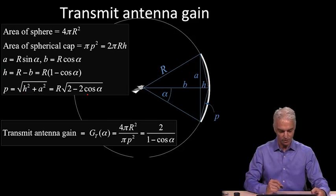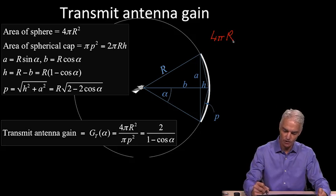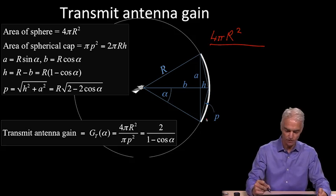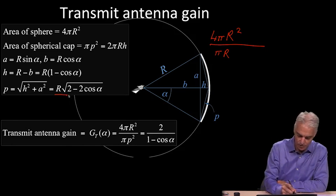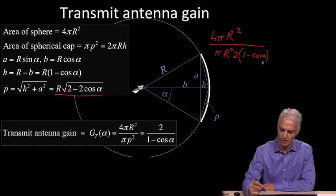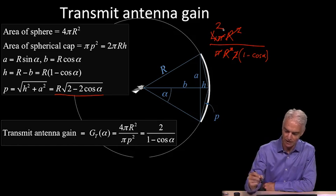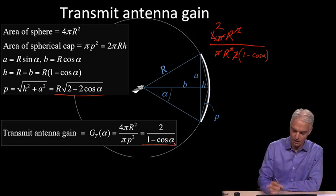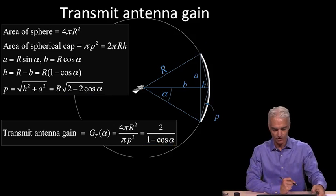We can go and write out our gain. The gain is the ratio of the entire sphere, 4πr², over the ratio of the spherical cap, which is π times p². Now we know what p is in terms of alpha. p² is this value here, squared. It's r². The square root sign disappears, and I'm going to take out 2 and write it as 1 - cos α. You can see how this simplifies so nicely. The r's cancel, the π cancels, and 2 goes into 4 twice. We are left with this elegant result that for any given alpha, the antenna gain is 2 over (1 - cos α). That's a nice result.